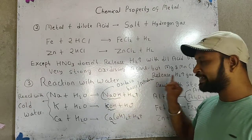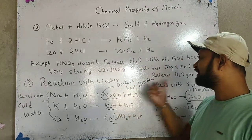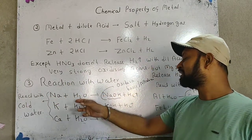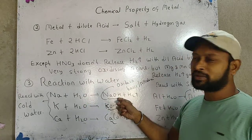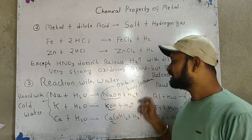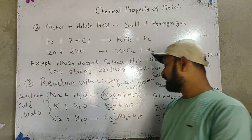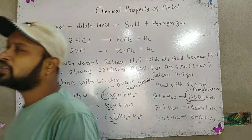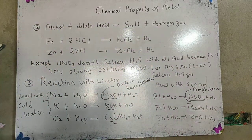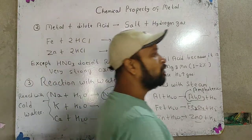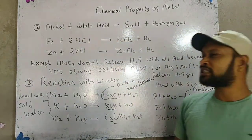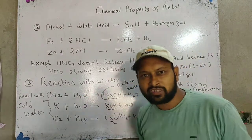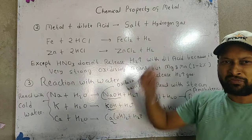When the metal reacts with cold water, it forms an oxide that is basic and alkaline in nature. For example, when sodium reacts with water it forms sodium hydroxide and hydrogen gas. When potassium reacts with water it forms potassium hydroxide and hydrogen gas. When calcium reacts with water it forms calcium hydroxide and hydrogen gas.